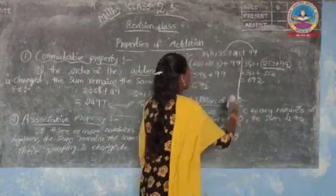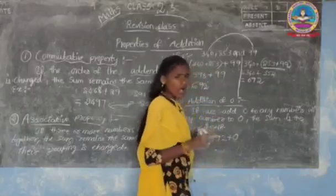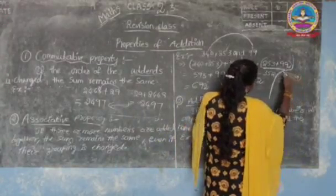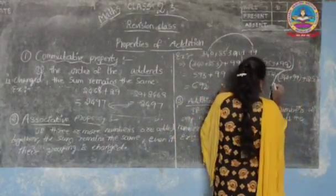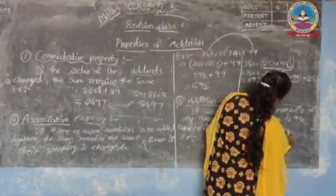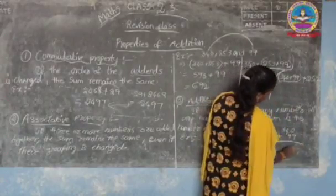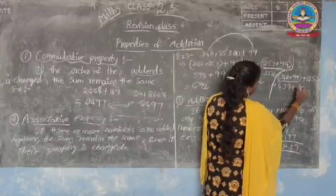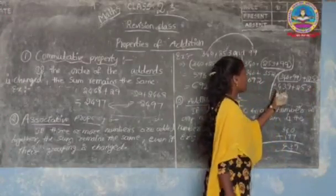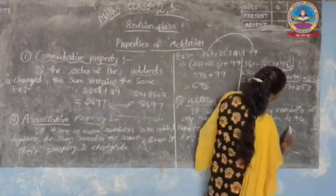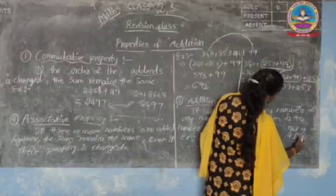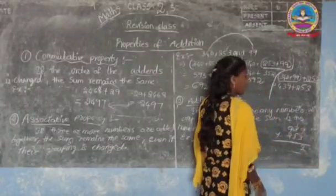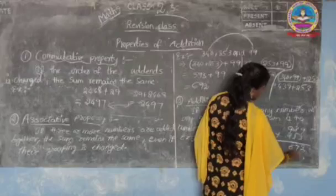Now let us group the first and last numbers: (340 plus 99) plus 253. First we add 340 plus 99: 4 plus 9 is 13, carry 1; 3 plus 1 is 4. So we get 439. Now 439 plus 253: 9 plus 3 is 12, carry 1; write 2. 3 plus 5 is 8, plus 1 is 9. And 4 plus 2 is 6. We get 692.